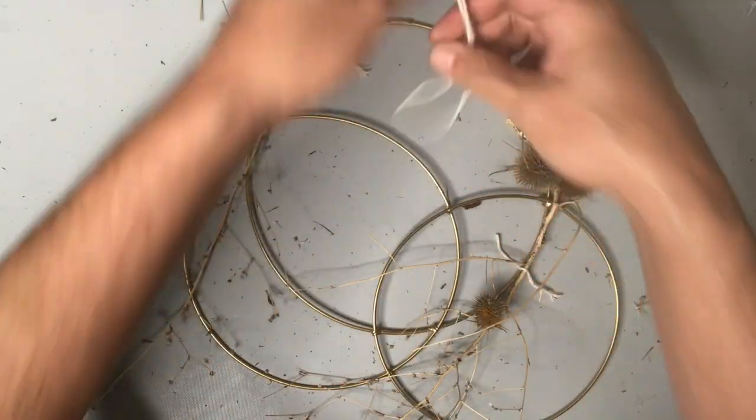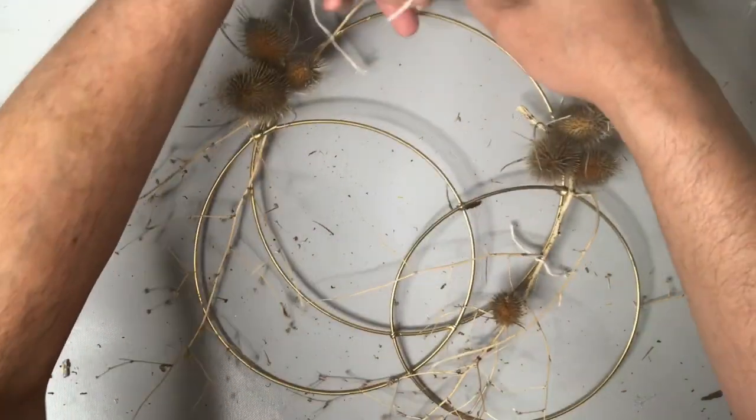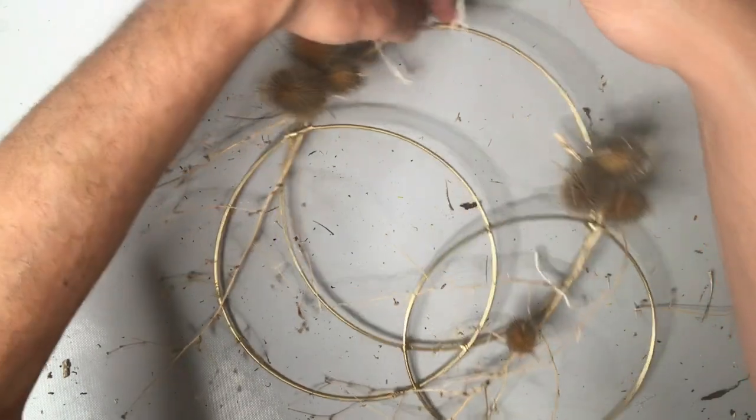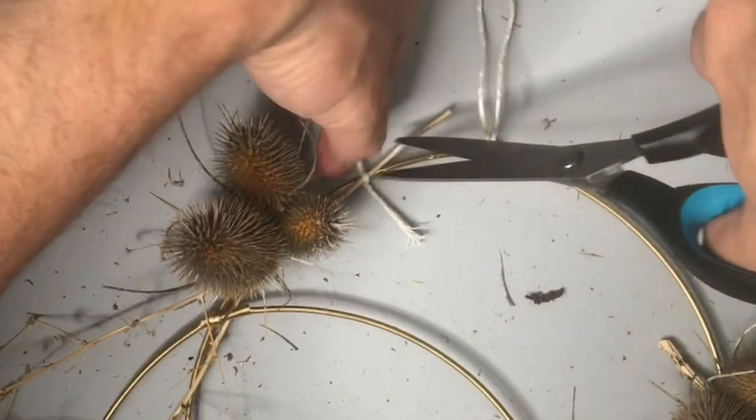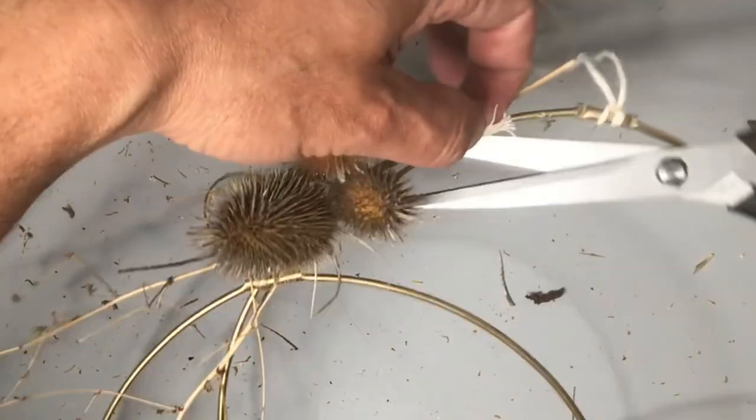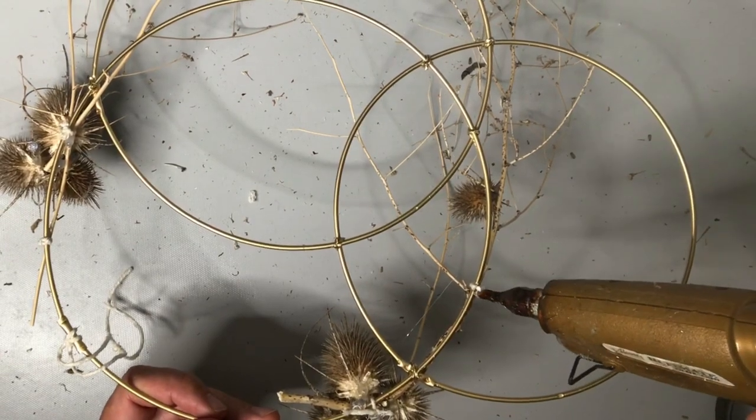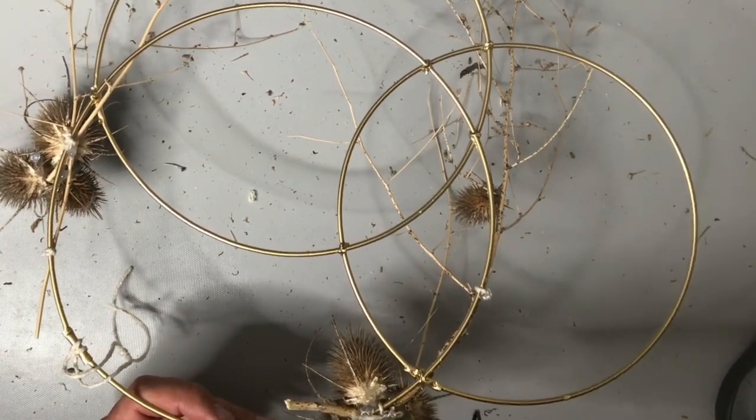I think our wreath is coming together quite nicely. It's quite sparse actually which is great because I really want the viewer to see the shape of those concentric circles while still appreciating this vegetation around it. So I added some string to the top of our wreath as a hanging mechanism.